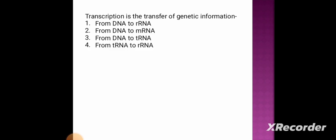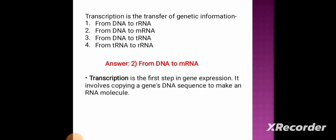The first question: transcription is the transfer of genetic information. Option 1: from DNA to rRNA (ribosomal RNA). Option 2: from DNA to mRNA (messenger RNA). Option 3: from DNA to tRNA (transfer RNA). Option 4: from tRNA to RNA. The answer is option 2 — from DNA to mRNA. Transcription is the first step in gene expression; it involves copying a gene's DNA sequence to make an RNA molecule.